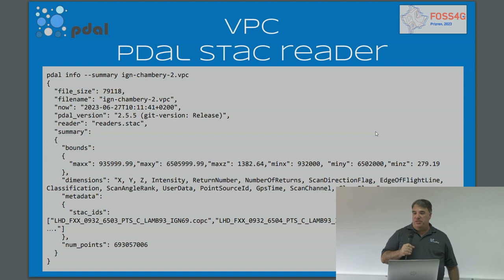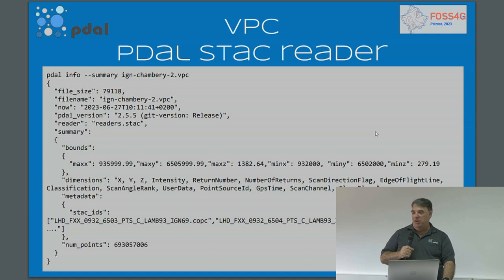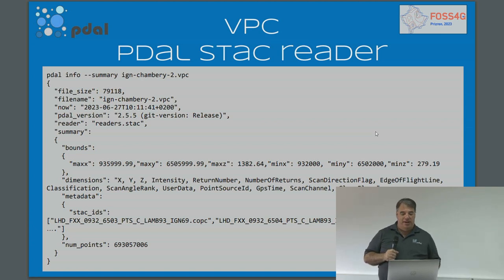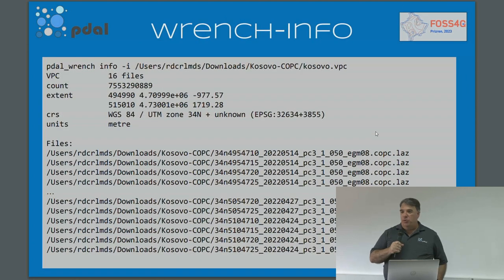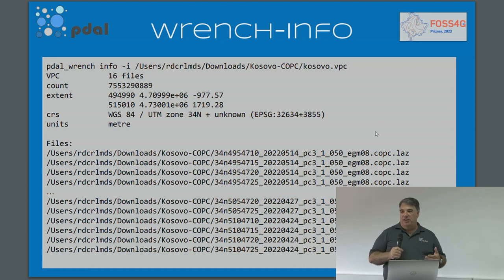Poodle has a stack reader. Here's reading a STAC item collection — this is a virtual point cloud created with Poodle Wrench. It reads basic information about the STAC item collection: all the bounds, the STAC IDs that went into it, and the total number of points. This was 693 million points, so it's a pretty big collection of data. Poodle Wrench can do the same thing and present it in a more user-friendly fashion. Poodle is designed as a library and returns JSON; Wrench is designed as a higher-level application and returns output in more of a text format.